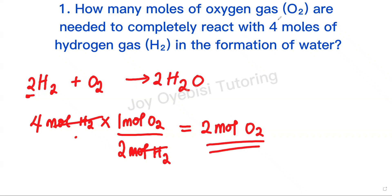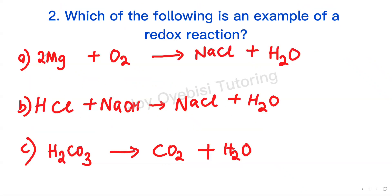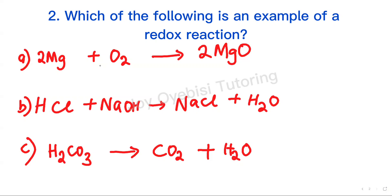And that's our final answer: 2 moles of oxygen gas. Question 2: Which of the following is an example of a redox reaction? Starting with option A, the rule states that all elements in their uncombined form have 0 as their oxidation number.